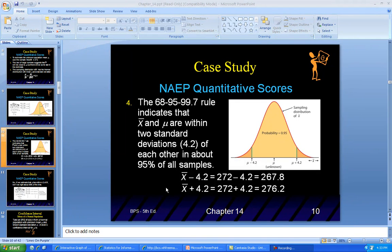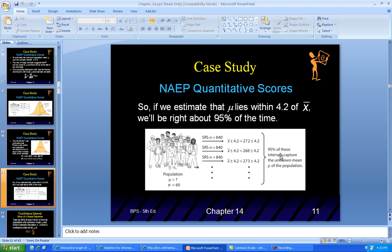We continue with Chapter 14 where we left off. We were looking at confidence intervals and found out the data for these NAEP quantitative scores. We found out with 95% probability that our statistical mean will be close to the population mean, between 267.8 and 276.2. We estimate that the population mean mu lies within 4.2 of our statistical mean x-bar, and we'll be right about 95% of the time.